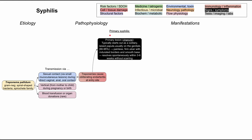These lesions usually start out as a solitary raised papule, and it's usually on the genitals in 90 to 95 percent of cases. It can also be around the anal region and on the fingers. It starts off as a solitary raised papule and develops into a painless, firm ulcer with indurated borders and a smooth base. This lesion then resolves on its own spontaneously within three to six weeks without any scarring.